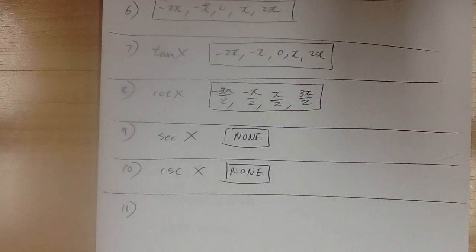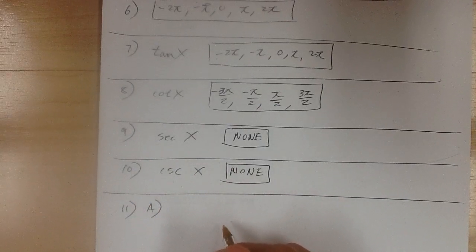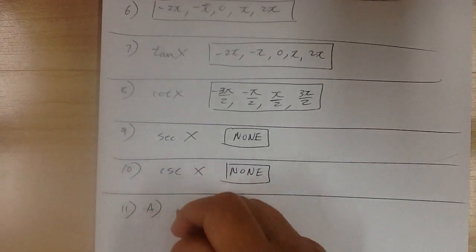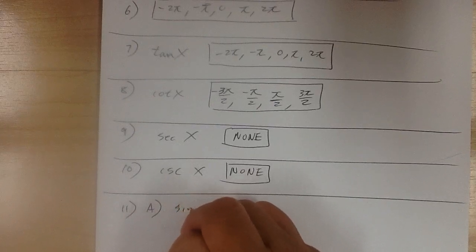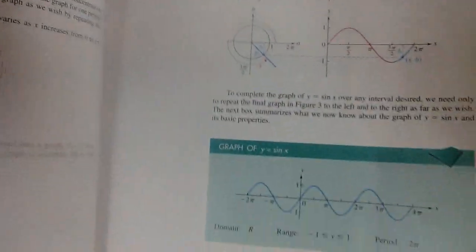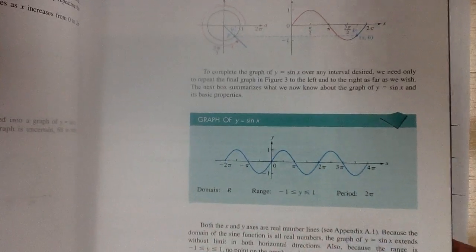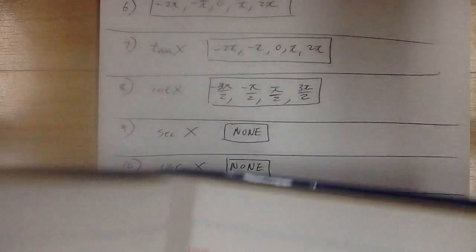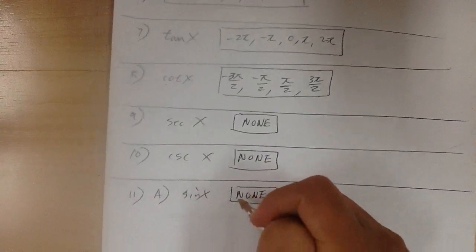Number 11a asks for undefined points. For sine x, undefined values occur at asymptotes. Since sine x has no asymptotes, all values are valid — there's no restriction. The answer is none.